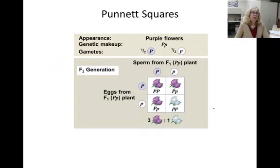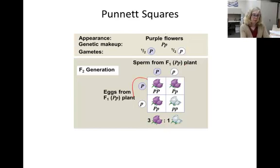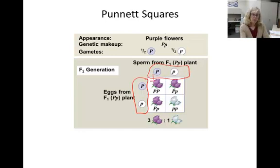Punnett squares are used to predict genotype of offspring if you're given the genotypes of the parents. In this case, we have two parents from the F1 generation that are both heterozygotes for the P allele that determines the presence of anthocyanin. The possible gametes from mom are either big P or little p, and the possible gametes from dad are big P or little p. You can then fill in the table to figure out how likely it is that an organism will be homozygous dominant, homozygous recessive, or heterozygous.